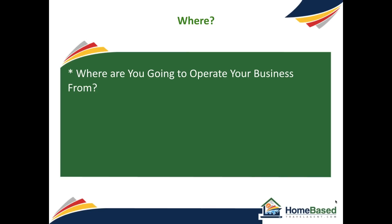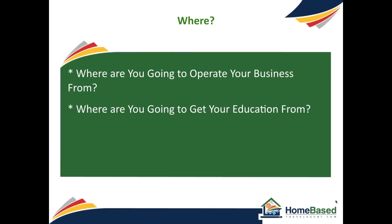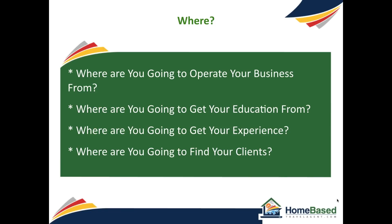Now we get to the question of where. Where are you going to operate your business from? This is a critical element that you need to think all the way through. Sure, you may know that you will be home-based, but where in your home, and what infrastructure do you have and need? Running an efficient business requires all of the tools to do so. Where are you going to get your education from? If supplier certification training is on the horizon, which certifications and suppliers, and in what order? You should add these to your timeline in their order of importance. Where are you going to get your experience? If you intend on becoming a river cruise specialist, you can become educated about the various lines by taking their certification courses, but to become truly knowledgeable, you need to know their products firsthand. Which lines and which vessels are you going to focus on, and when are you going to take these cruises? Where are you going to find your clients? We already discussed who your clients will be — now we need to understand where we're going to find them so we can market to them.